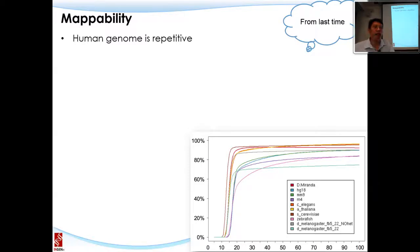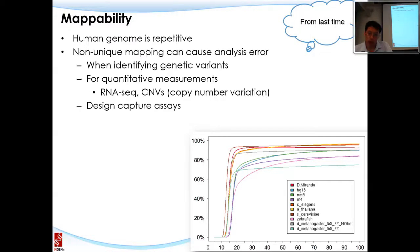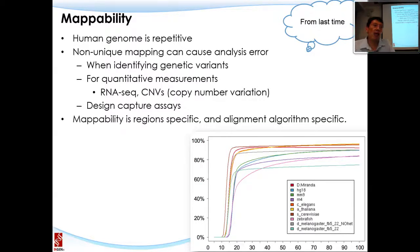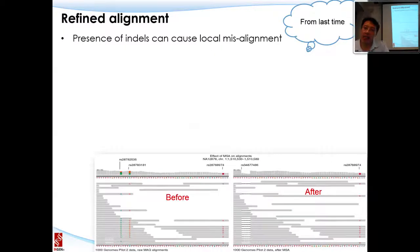A brief recap of the previous lecture: we talked about mappability and how over 52% of the human genome consists of repetitive elements. These non-unique mappings can cause many analysis problems—false positives in variant identification, issues with quantification measures like RNA sequencing and copy number variation, and must be considered when designing capture arrays. Mappability is both region-specific and alignment algorithm-specific.